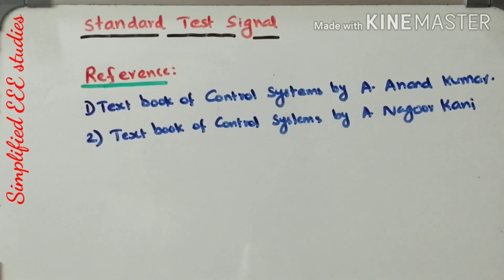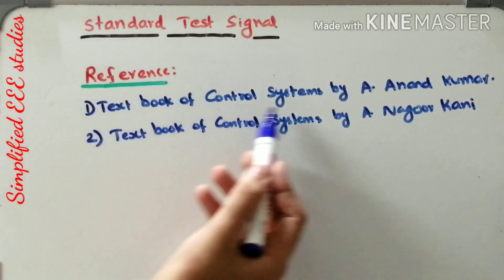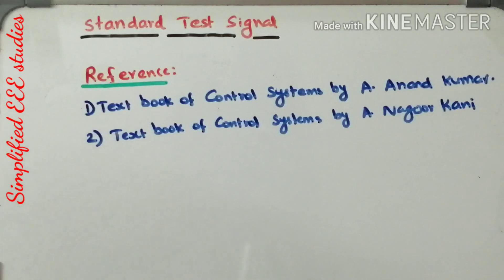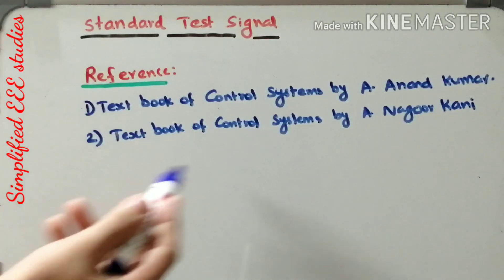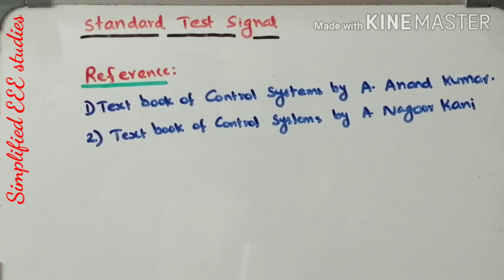In this session we have discussed the importance of different test signals and their individual applications. Recommended textbooks include the textbook of control systems by A. Anand Kumar and the textbook of control systems by A. Nagoor Kani. Thank you very much for watching this video. If this channel is useful for you, please do subscribe.